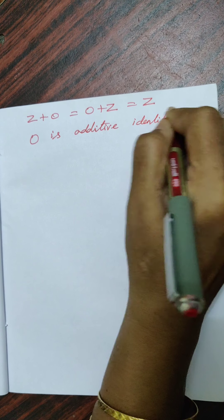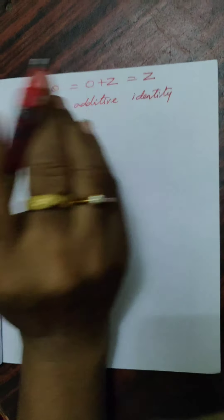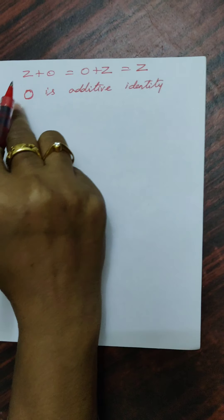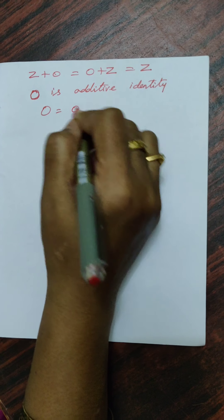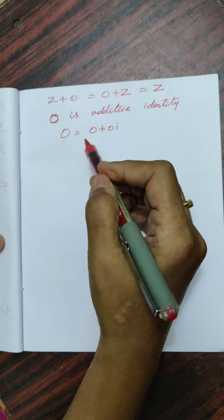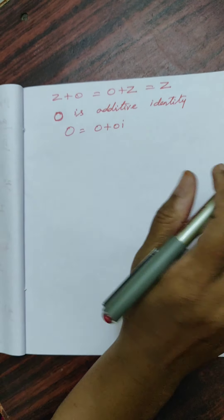The additive identity is 0 plus 0i. Identity applies to the full set — there is only one identity for the complex number set, which is 0. The fifth property is Inverse property. For Z belonging to the complex numbers, the additive inverse of Z is minus Z, which is the negative of Z — we change the sign of both real and imaginary parts.